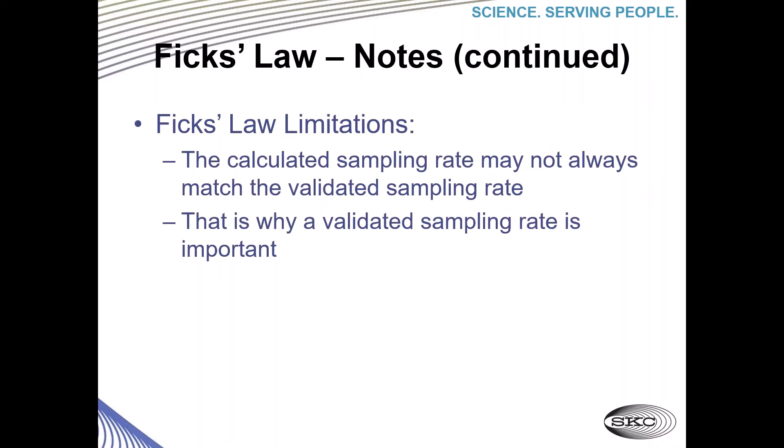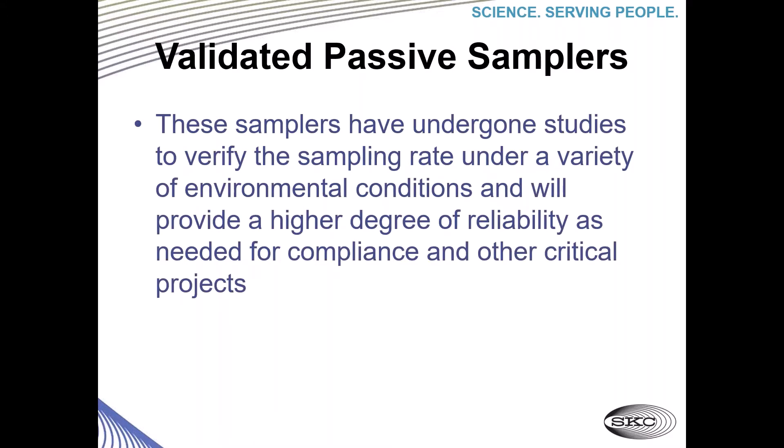Fick's law also has limitations: the calculated sampling rate may not always match a validated sampling rate. That is why a validated sampling rate is important. Validated passive samplers have undergone studies to verify the sampling rate under a variety of environmental conditions and will provide a higher degree of reliability as needed for compliance and other critical projects.